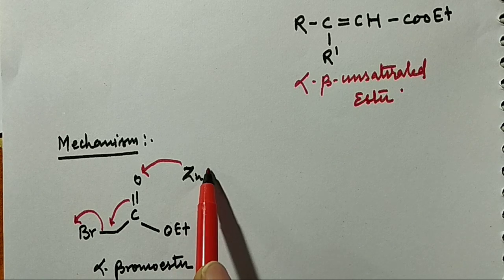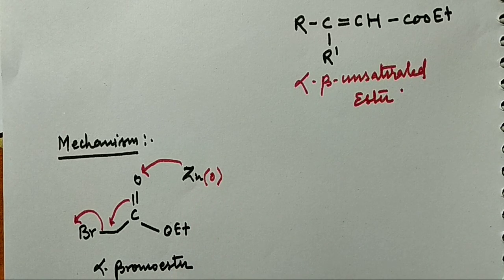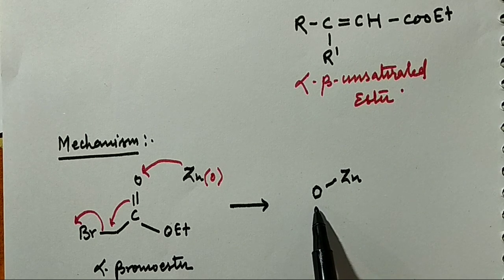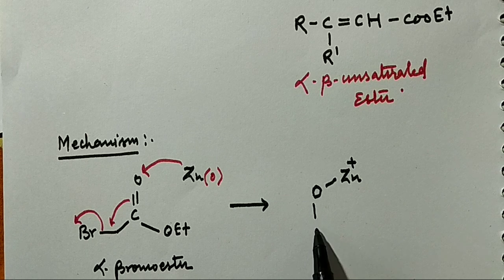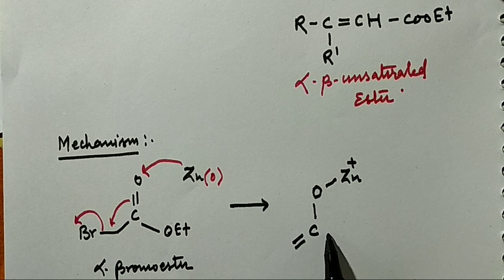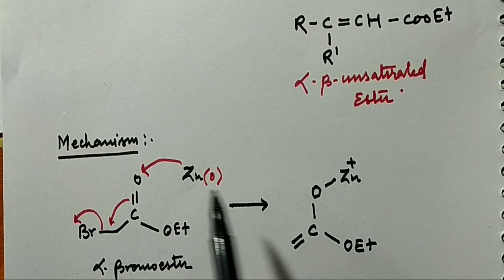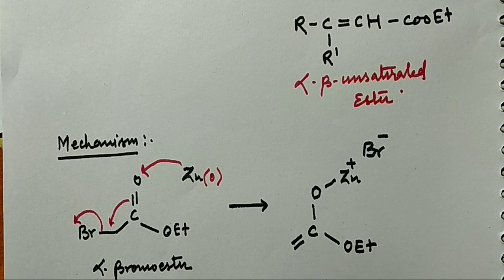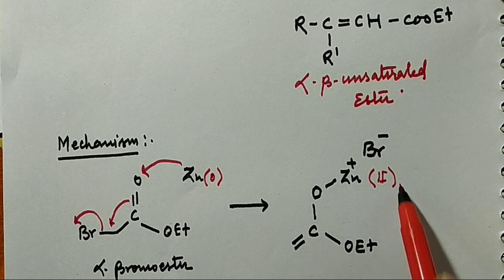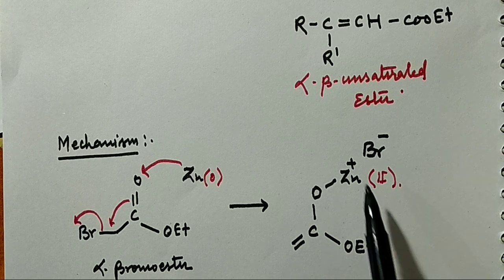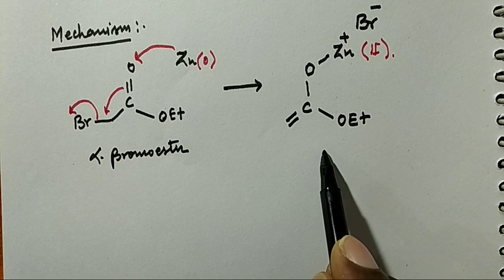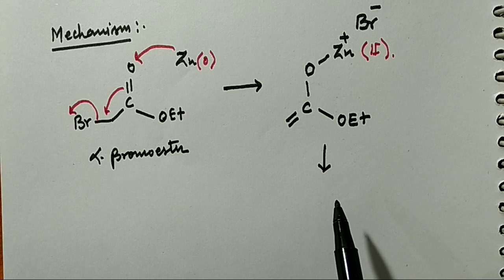Here the oxidation state of zinc is zero. A new species is then formed where the bromine goes with the zinc. The oxidation state of zinc becomes plus two. Finally, this zinc and bromine are attached to each other and we get a zinc enolate, which is called the Reformatsky reagent.